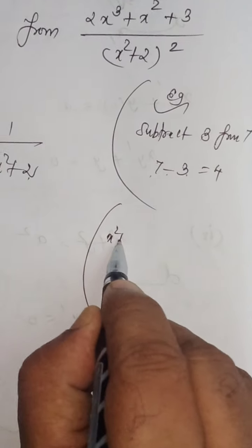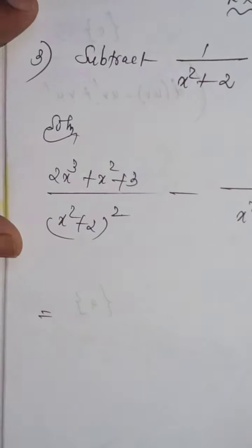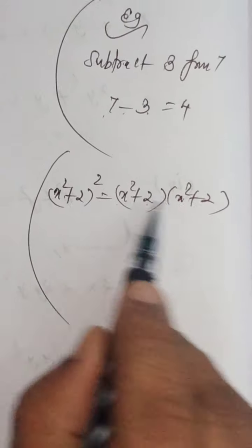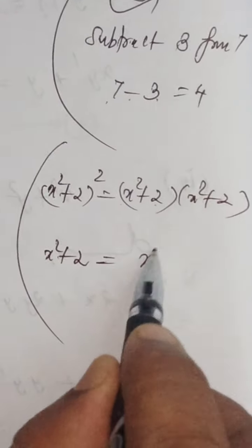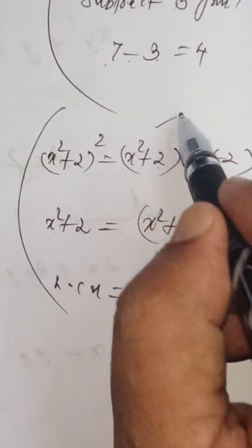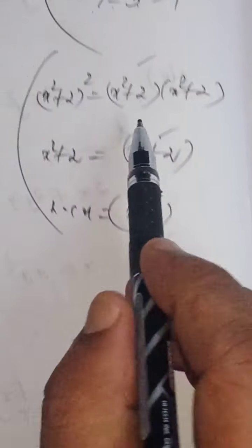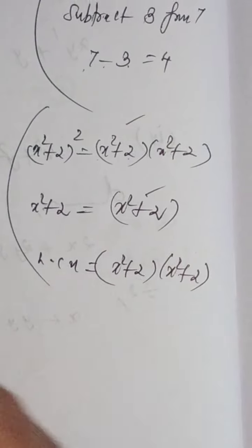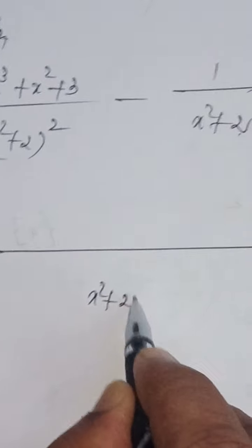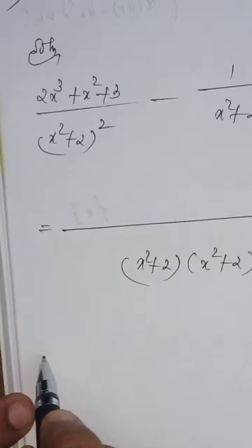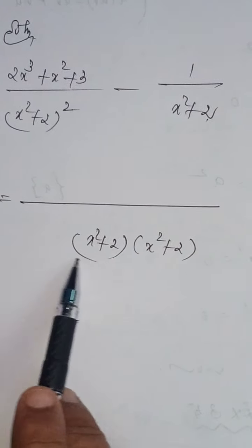For your reference: (x squared plus 2) whole squared equals (x squared plus 2) into (x squared plus 2), because we have squared in the power, so we write x squared plus 2 two times. Now how to take LCM: first write the common factor, which is x squared plus 2. After writing the common factor, the remaining x squared plus 2 should be included. So LCM is (x squared plus 2) into (x squared plus 2), or (x squared plus 2) whole squared. After taking LCM, this LCM should be divided by the denominator.